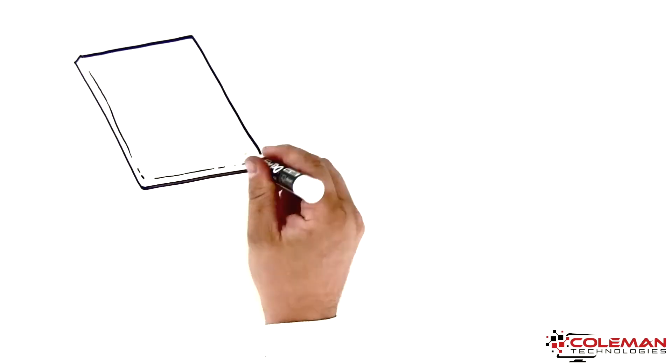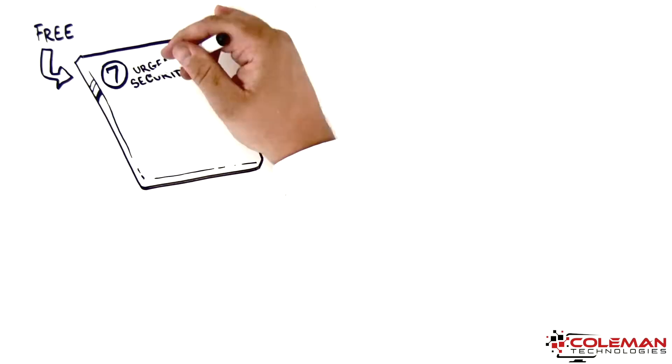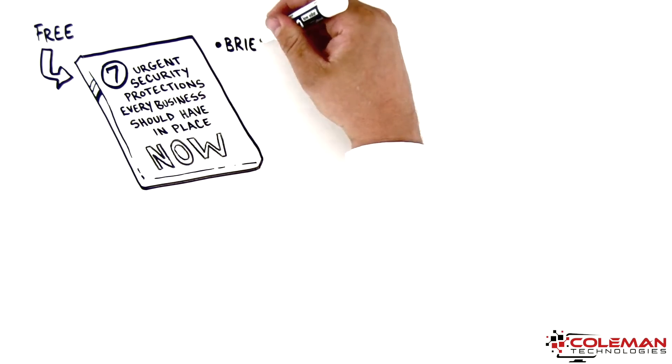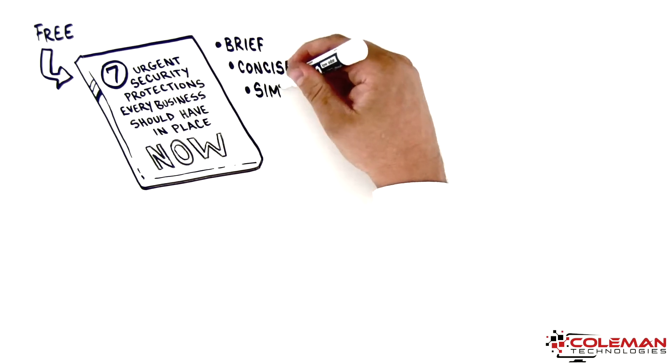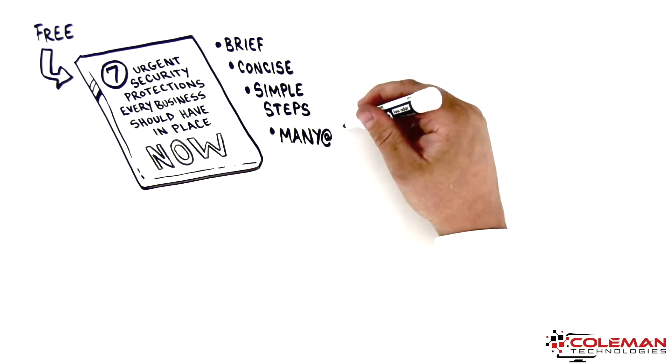Because we want to do our part in stopping cybercrime, we've put together a brand new free executive report titled 7 Urgent Security Protections Every Business Should Have in Place Now. This report is brief, concise, and contains simple steps you can easily implement, many at no cost, to protect your organization.